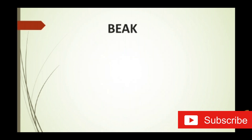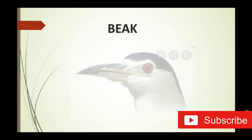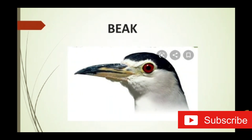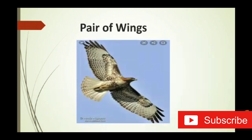Second, beak — instead of a mouth, birds have a beak in the head. Third, pair of wings — birds breathe through lungs like humans, and they have a pair of wings for flying in the sky. Birds also have lightweight bones which help them to fly easily in the air.